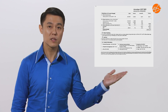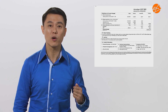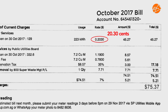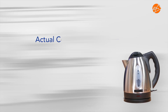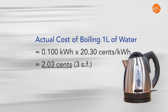This is a utilities bill of a 3-room flat for the month of October. The cost of electricity is 20.30 cents per kilowatt hour. Based on the actual energy consumption in the previous experiment, it costs 2.03 cents to boil one liter of water.